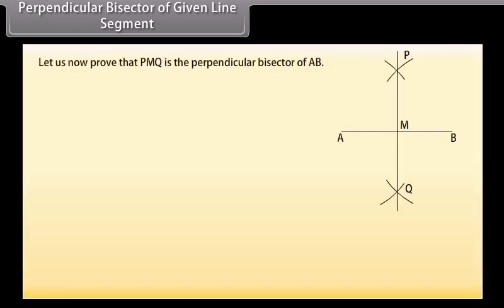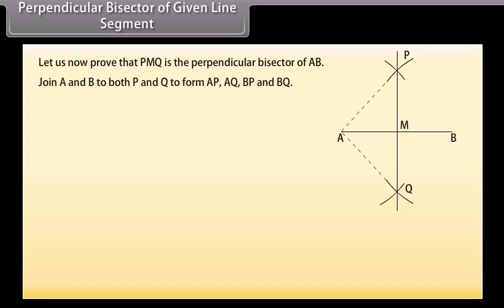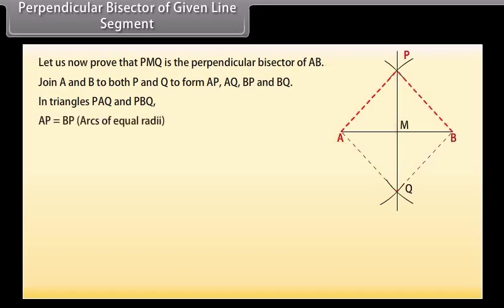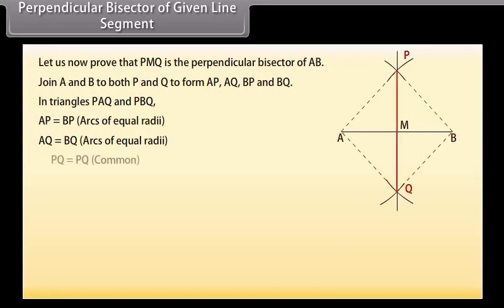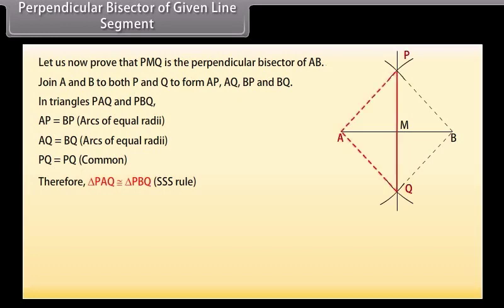Let us now prove that PMQ is the perpendicular bisector of AB. Join A and B to both P and Q to form AP, AQ, BP and BQ. Now, in triangles PAQ and PBQ: AP equals BP because these are arcs of equal radii; AQ equals BQ because these are also arcs of equal radii; PQ equals PQ, common. Therefore, by SSS congruence rule, triangle PAQ is congruent to triangle PBQ. So, angle APM equals angle BPM by CPCT.